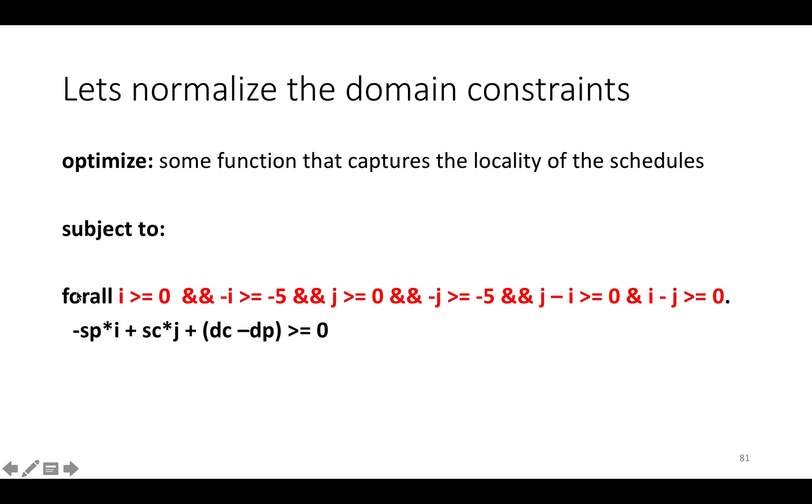So what we have in this formula is for all i and j, vectors ij in a polyhedron, the vector minus sp sc dotted with ij plus a constant is greater than or equal to zero. So in fact this is a constraint of the form for all variables in a polyhedron, an affine form over that polyhedron is greater than or equal to zero, and we can apply Farkas Lemma to it.